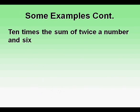Let's look at some examples. 10 times the sum of twice a number and 6. This translates to 10 next to the quantity 2n plus 6, which are inside parentheses. Note that when you see the word sum of, what comes after that needs to go inside parentheses.